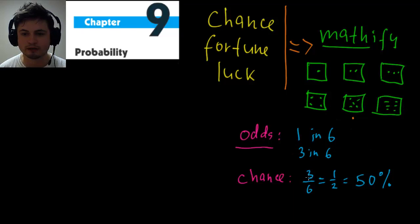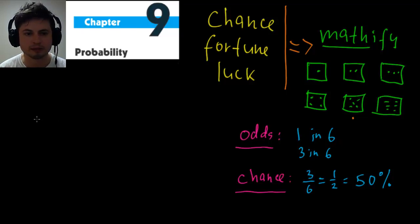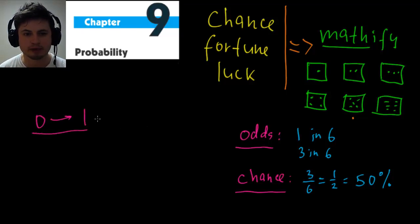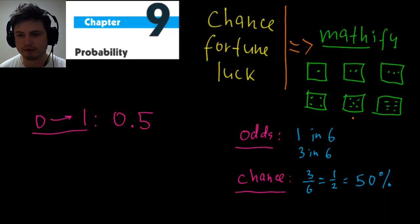That's the second way of expressing probability — via chance or percentage. You can also express it as a number, and this is what you'll see most in this chapter: numbers between zero and one. For this example, the probability of getting four, five, or six is 0.5, which is essentially 50%.